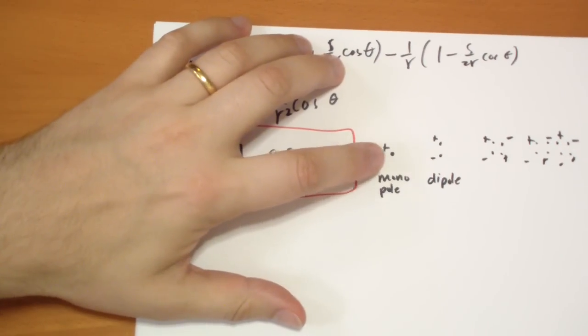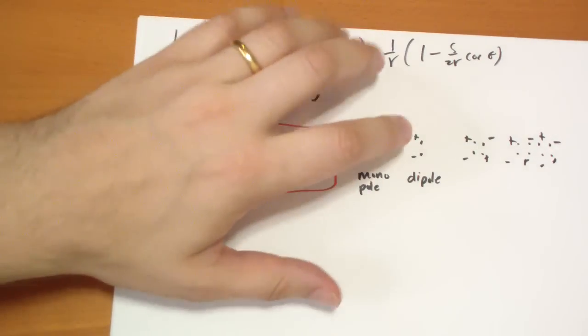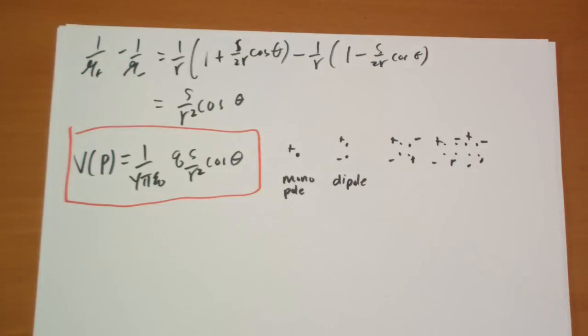And you can convince yourself that when you had a monopole, which is basically a point charge, the potential decreased by 1 over R. For the dipole, 1 over R squared. This one's actually 1 over R cubed. And for an octopole, it's 1 over R to the fourth. Hope you had fun. Thanks. Bye.